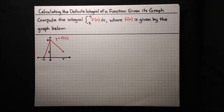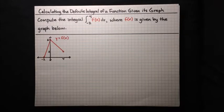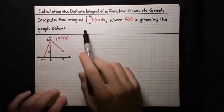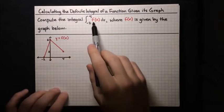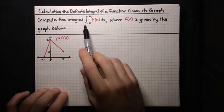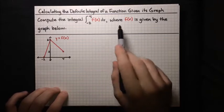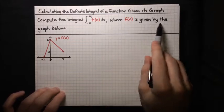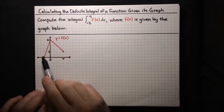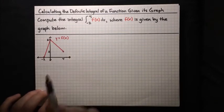In this video, I'm going to show you how to compute the definite integral of a function given its graph. So we want to compute this definite integral: the integral of f dx from x equals negative 2 to x equals 4, where f is given by this graph below — just this peak shape here.